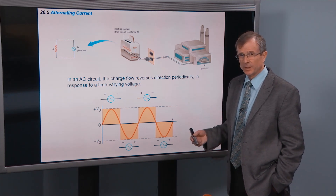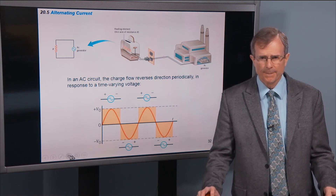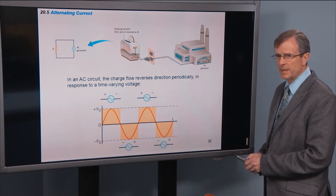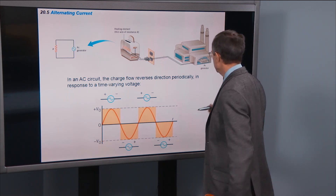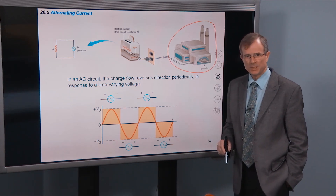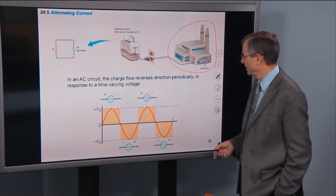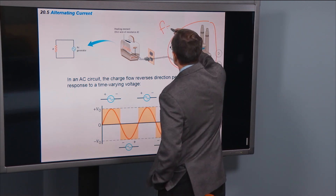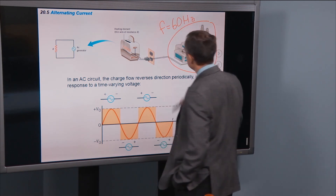In an AC circuit — alternating current circuit — the charge flow reverses direction periodically in response to a time-varying voltage. What's driving this is some generator, in our case a power station, generating electricity with a frequency of 60 hertz, 60 cycles per second.